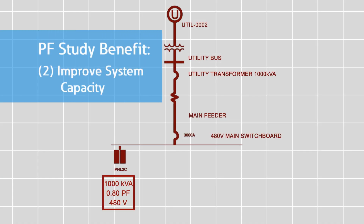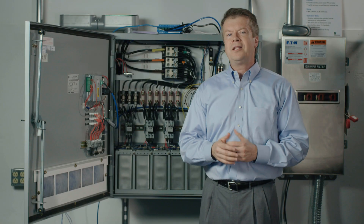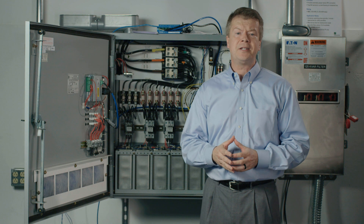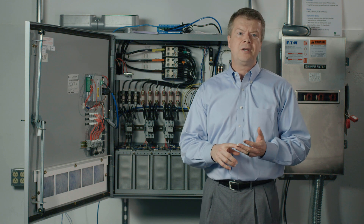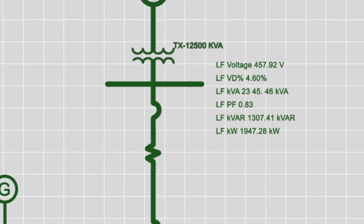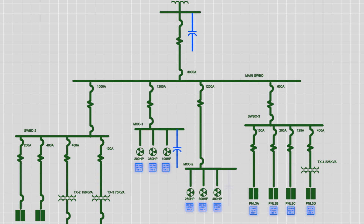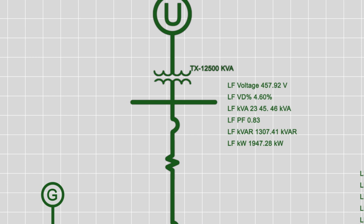Secondly, it can show you how to add more load to your existing system. For capacity reasons or voltage drop considerations, power factor correction equipment is strategically placed throughout a power system. The payback on this scenario is that you don't have to upgrade existing transformers, circuit breakers, and cables to accommodate new loads. With a power factor correction study, you can determine the size of the capacitors and the optimal location to place them so that they'll either eliminate the power factor penalty from your bill or improve the capacity of your power system while improving voltage levels throughout the system.